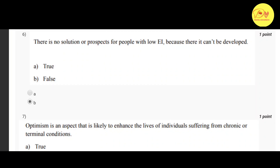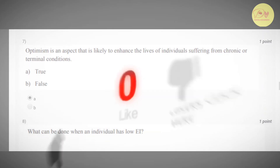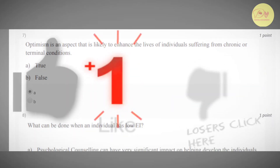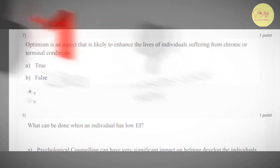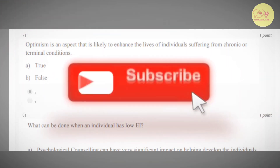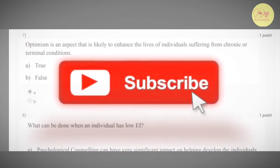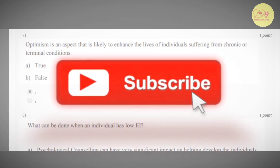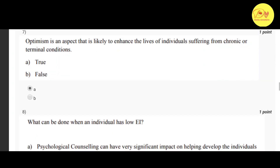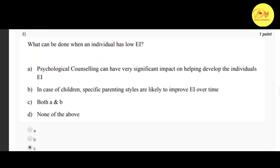Our sixth question: there is no solution or prospects for people with low EI because it can't be developed. The correct option is B: false. Our seventh question: optimism is an aspect that is likely to enhance the lives of individuals suffering from chronic or terminal conditions. The correct option is A: true.